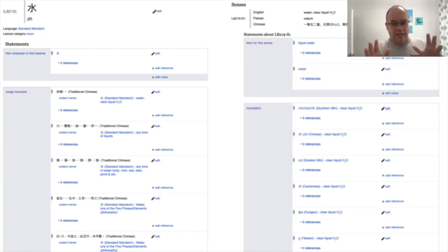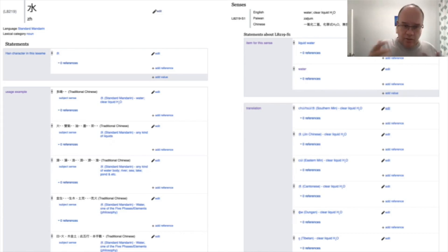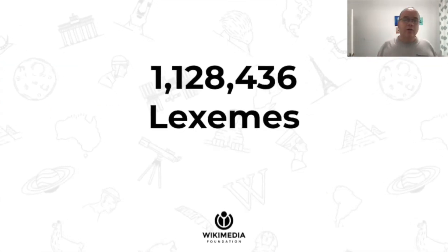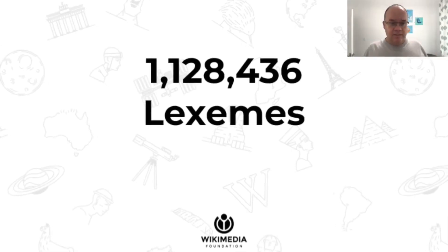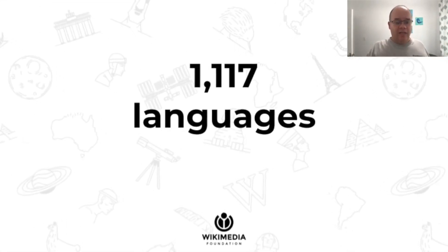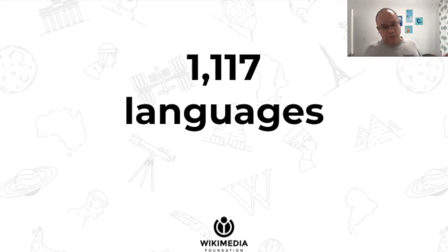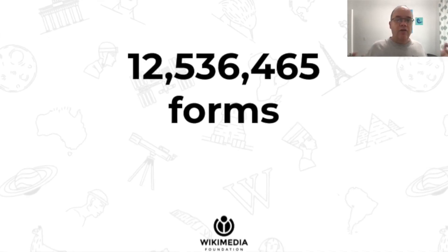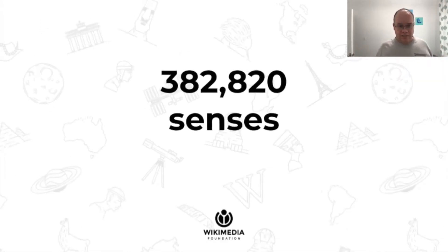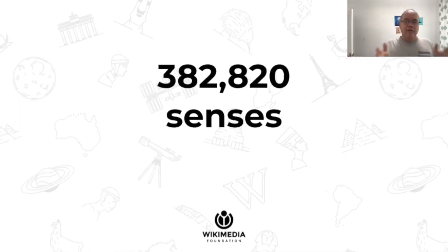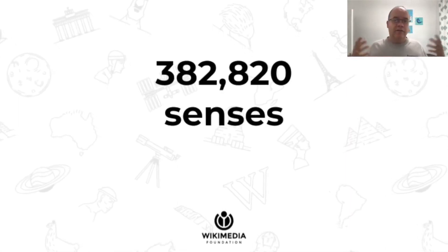The lexicographical database started quite a bit later than the ontological database, so it's not as far advanced. As of now, we have more than 1.1 million lexemes or words in Wikidata in more than a thousand languages, covering more than 12.5 million different forms and close to 400,000 senses. That's Wikidata — offering both an ontological and a lexicographical knowledge graph.